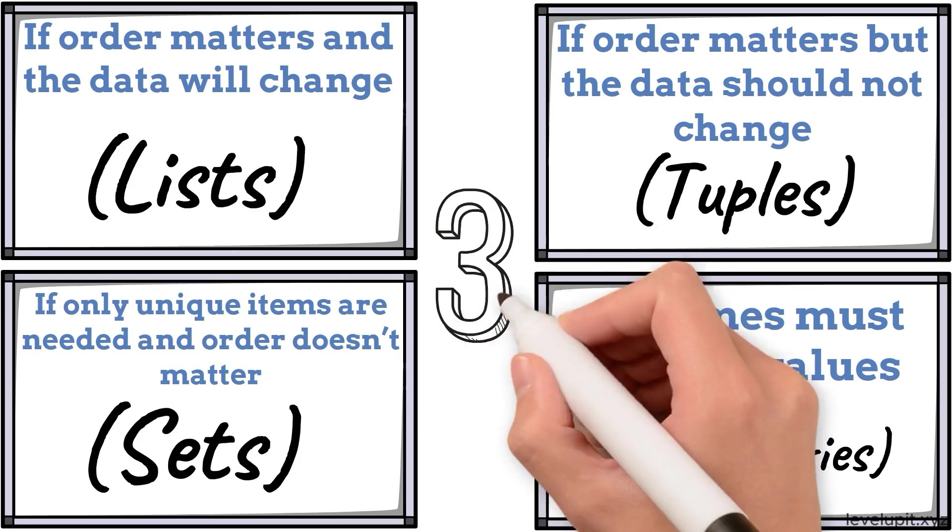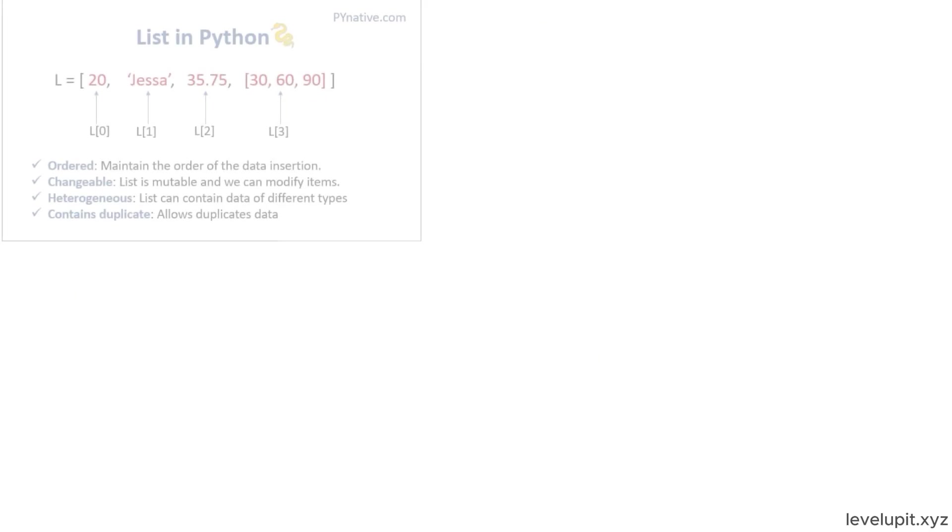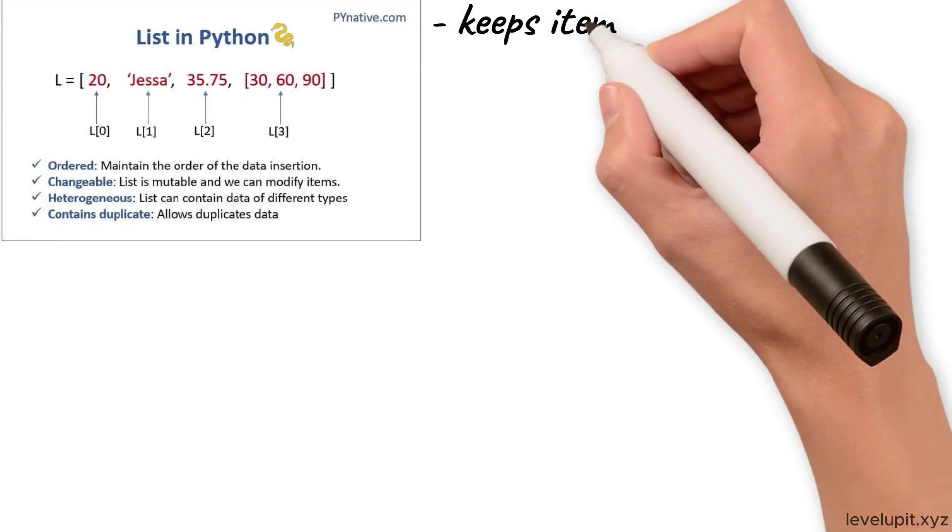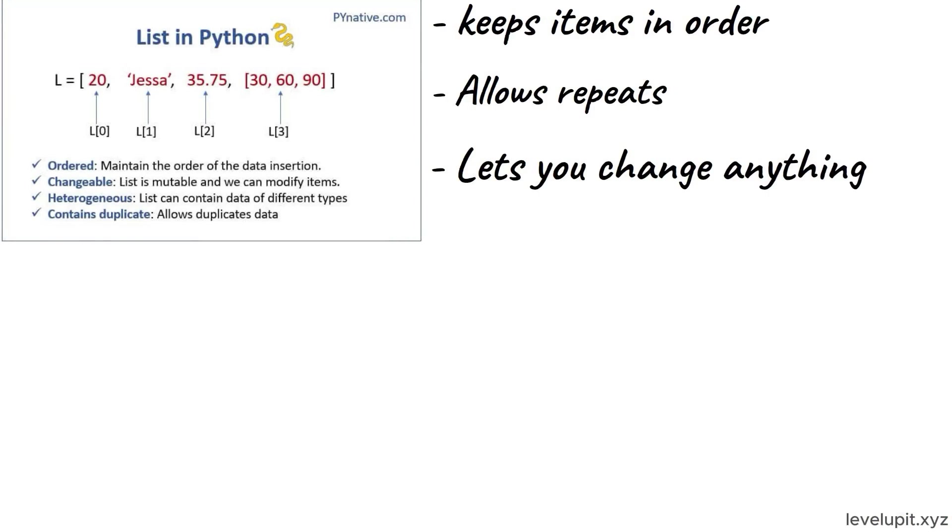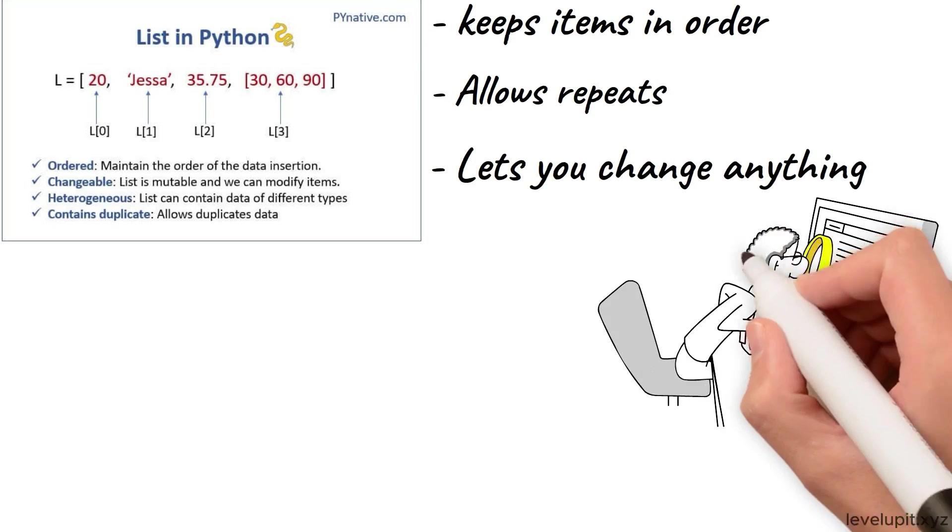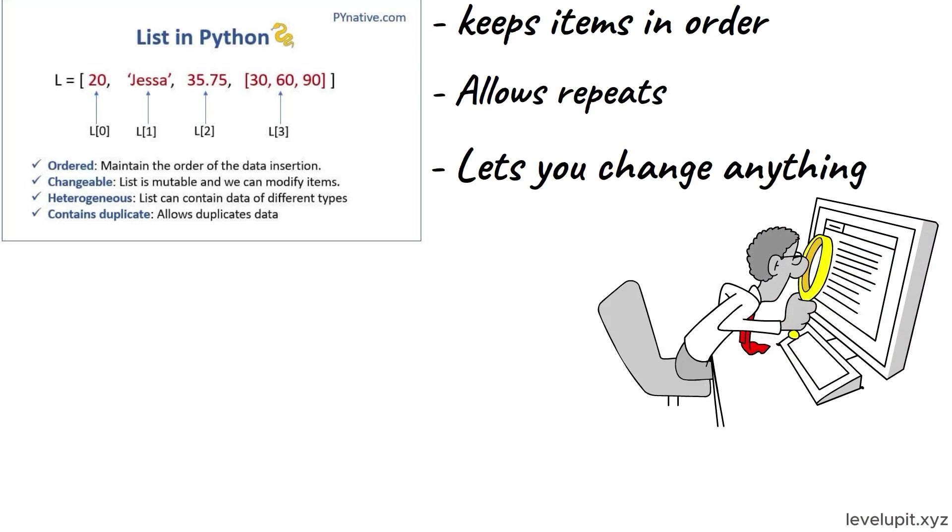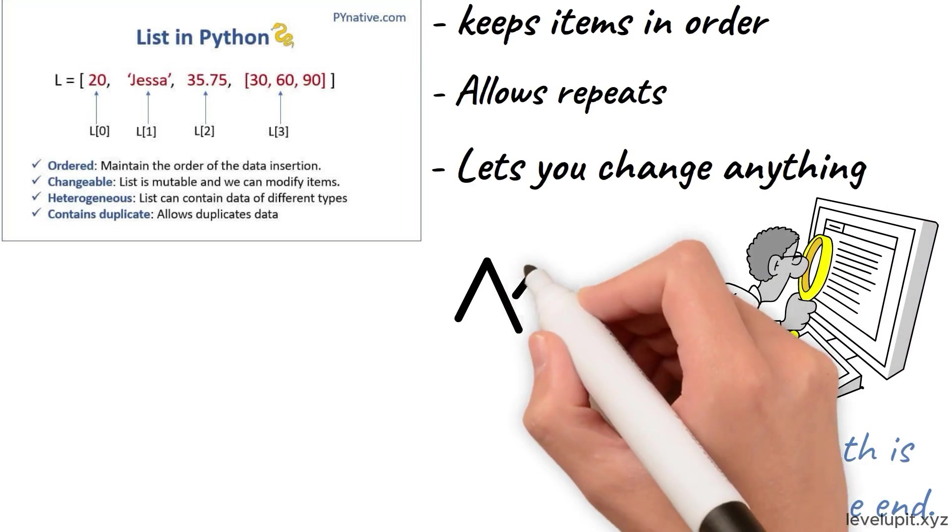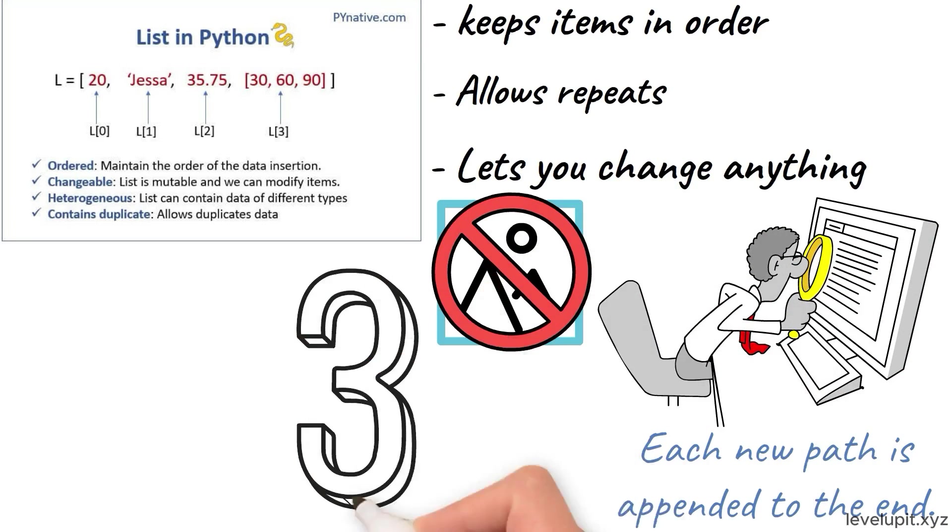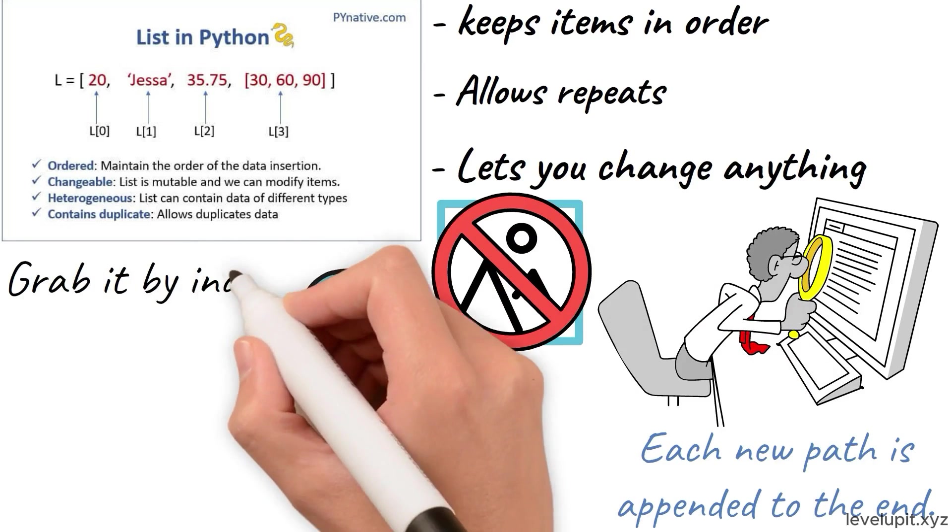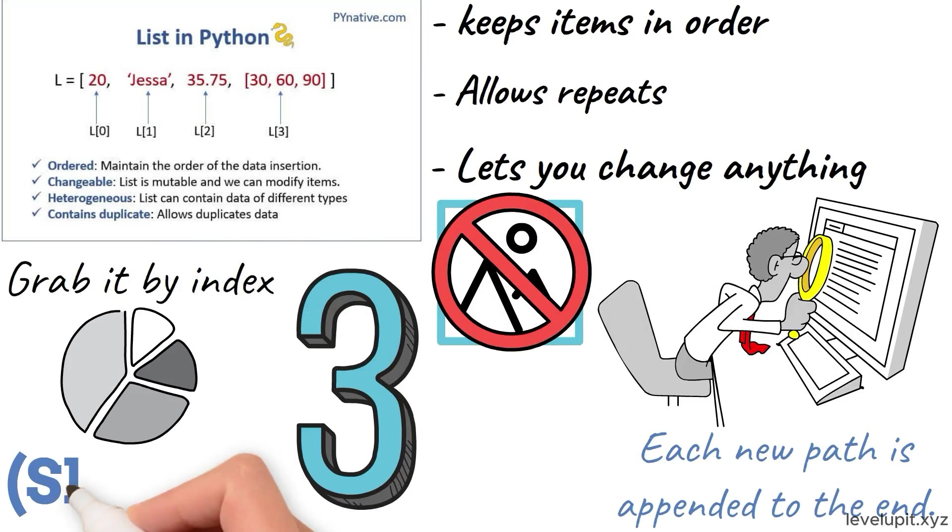Start with lists. A list keeps items in order, allows repeats, and lets you change anything. Picture scanning a folder and collecting file paths as they appear. Each new path is appended to the end. If a thumbnail job finishes, remove its path. If you need the third item, grab it by index. If you want a part of the list, slice it.